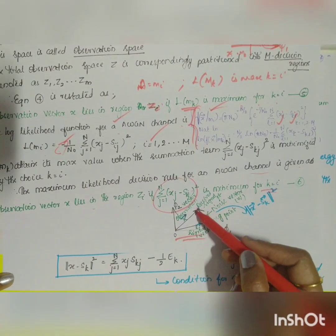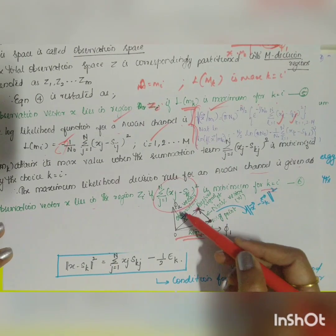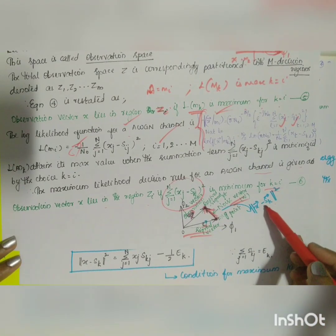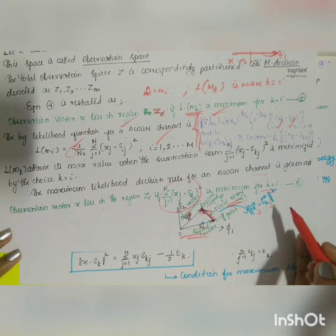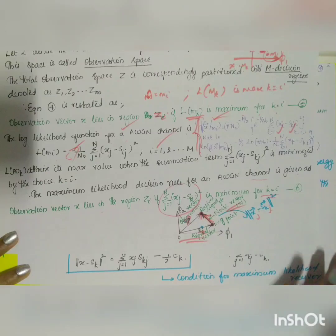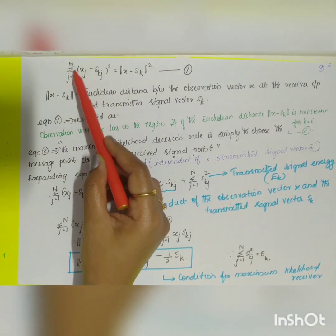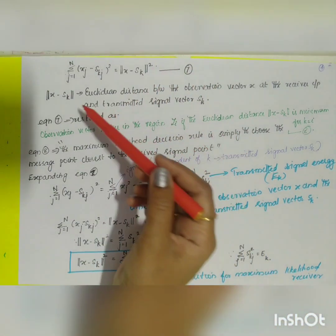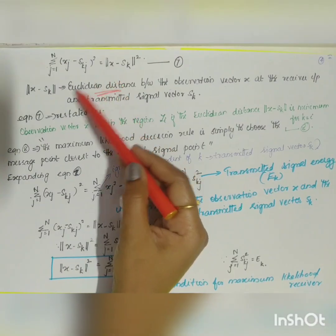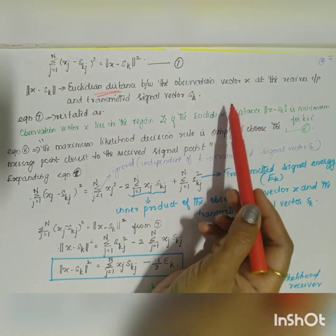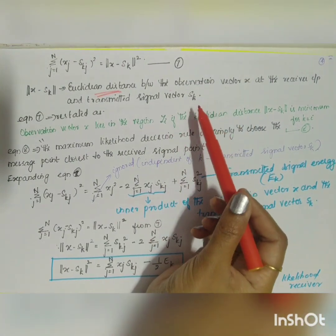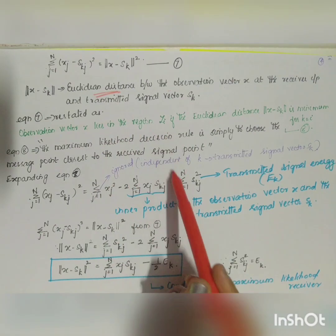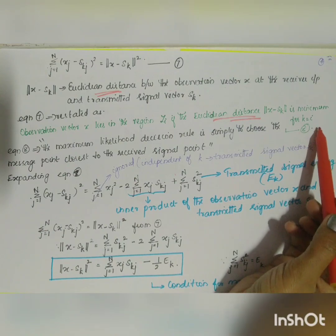Diagrammatically, on axes φ1 and φ2, the message point sk and the received signal point x are shown. The difference vector x − sk represents (xj − skj). Therefore, Σ(j=1 to N)(xj − skj)² equals the squared Euclidean norm ‖x − sk‖². The Euclidean distance between the observation vector x and transmitted signal vector sk should be minimum for k equal to i.